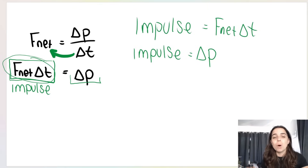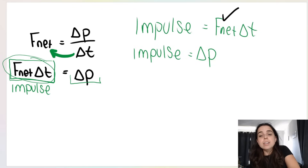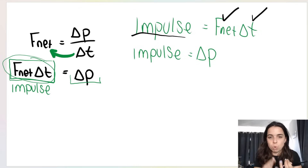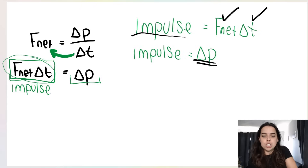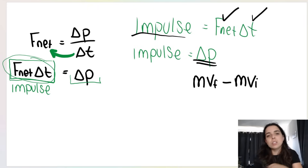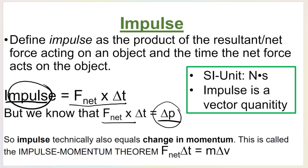So if they ask you to calculate the impulse acting on an object, there are two ways to do this. Either you use F net and delta t, or if you are not given net force and time, you can use change in momentum — which is mass times final velocity minus mass times initial velocity. This relationship, where impulse equals F net times delta t equals delta p, is called the impulse momentum theorem.